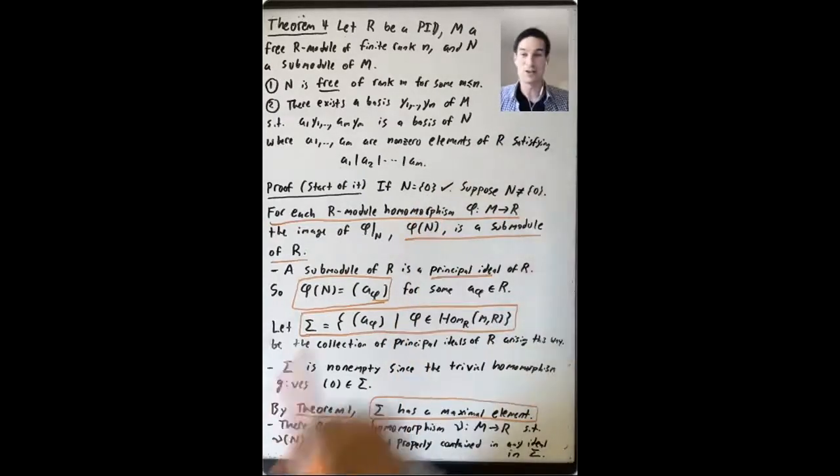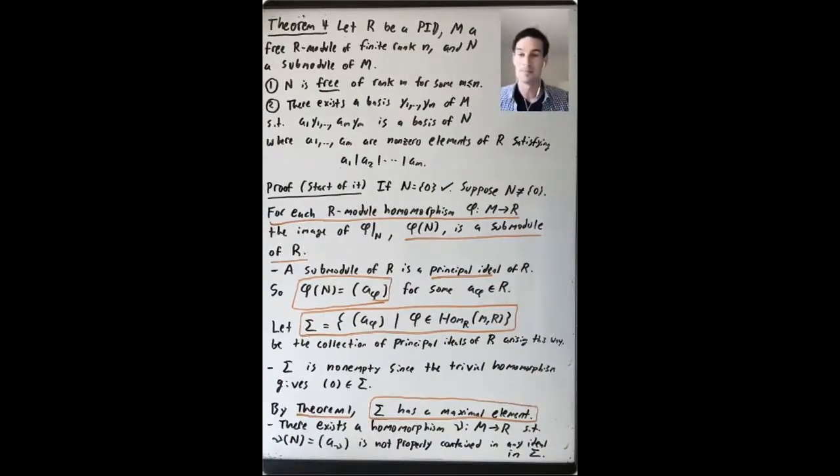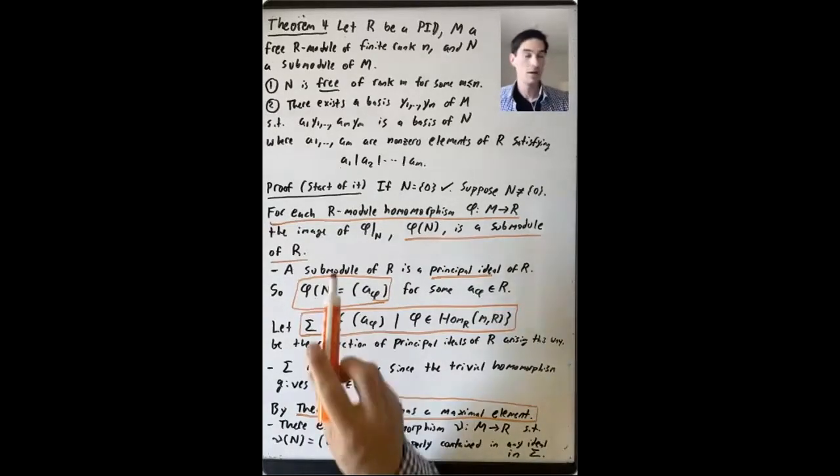If N is the trivial zero submodule, there's nothing to prove. So let's suppose that N is not zero. There are several clever ideas at the beginning of this proof. There are several key things to remember.